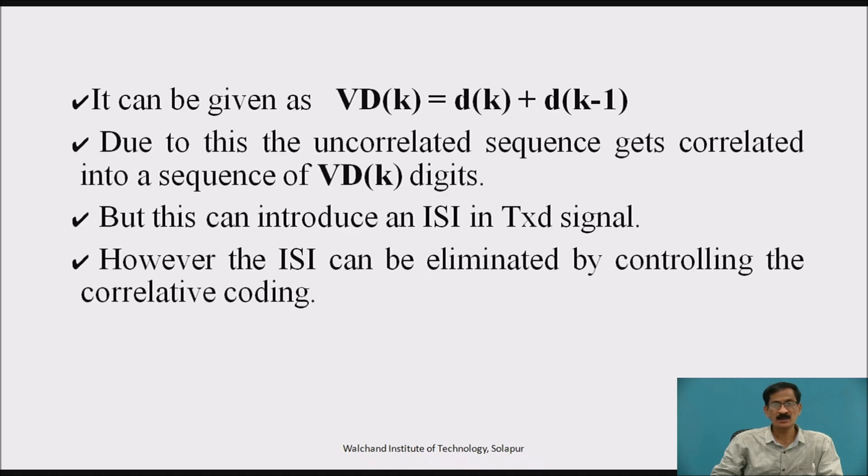It can be given as VD(k) which is output of encoder is d(k) plus d(k-1). Due to this, the uncorrelated sequence gets correlated into a sequence of VD(k) digits.